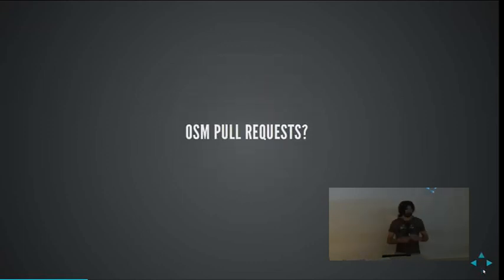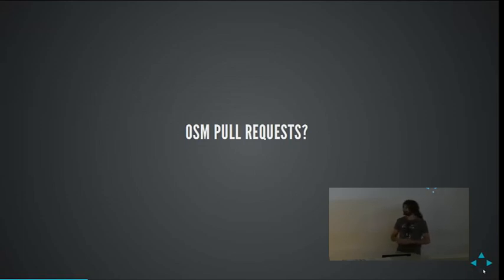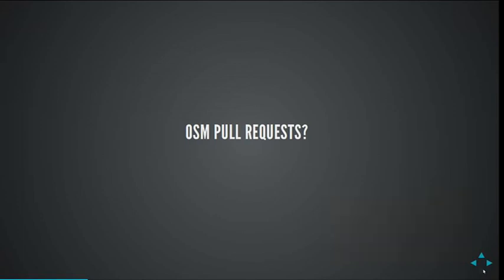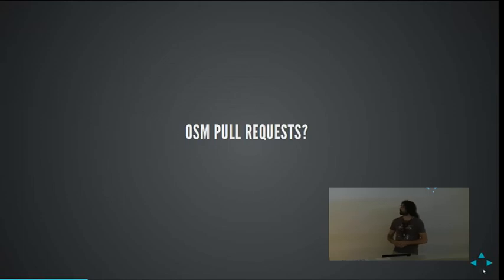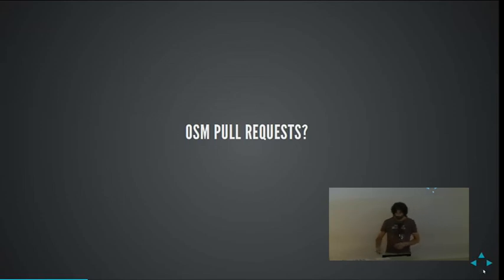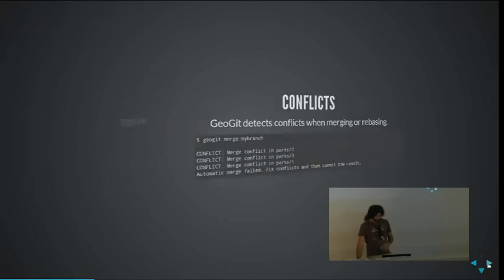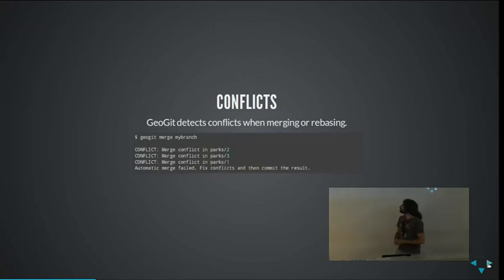One thing that could eventually be possible is a new way of collaborating. In Git you have what we call a pull request. You do your changes in your local copy and then you can ask another repo to pull those changes. If we move that to a geo context, we could have something like an OpenStreetMap pull request — someone adds changes and makes a request: here are my changes, do you want to pull them into the central repo? That's the way development is done in Git, and this could be adapted to geodata, particularly to OpenStreetMap.